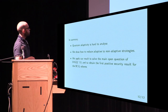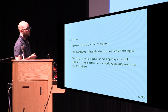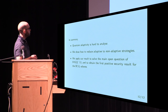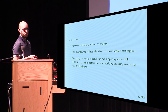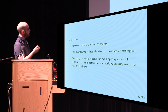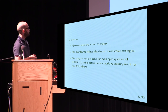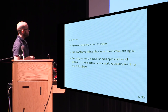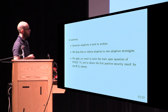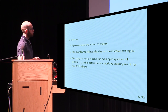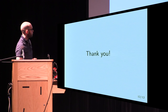To conclude: the main takeaway is that quantum adaptivity is really hard to analyze compared to classical adaptivity as we have defined it. We show how to reduce quantum adaptive attacks to quantum non-adaptive attacks, which are much easier to analyze. We apply this result to solve the main questions of our paper and obtain the first security result on the BCGL scheme. Thank you.